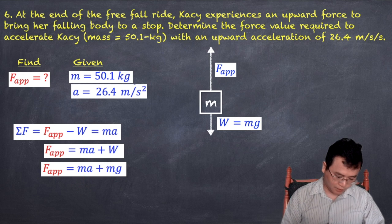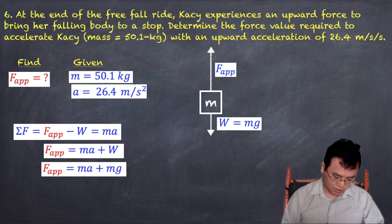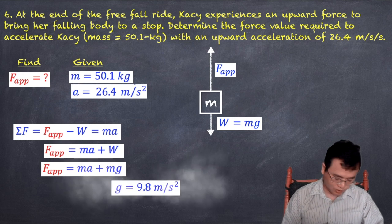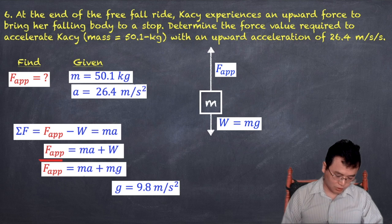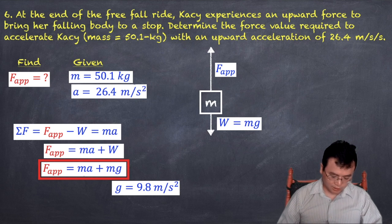Now we have m, we have a, we have g which is 9.8 meters per second squared, so therefore we can solve this problem like that.